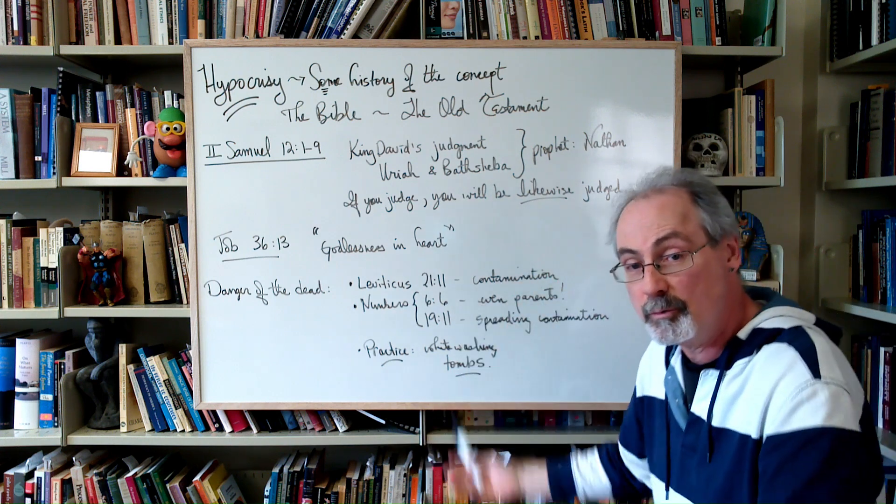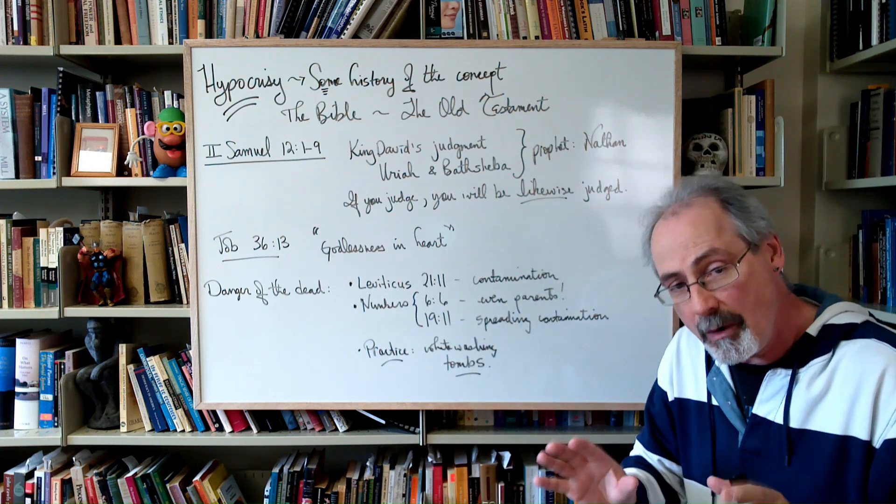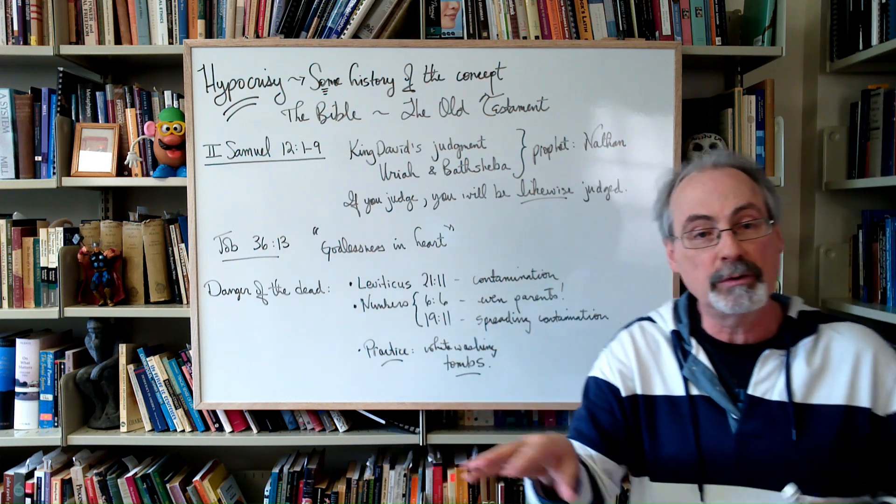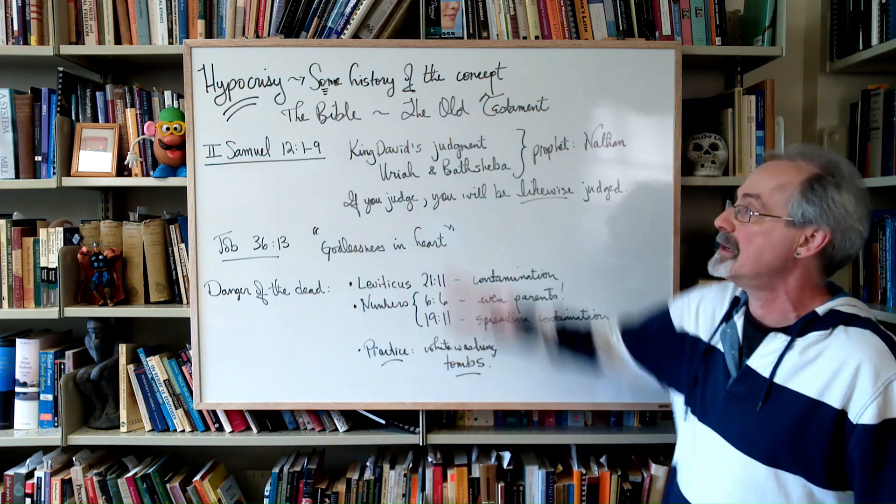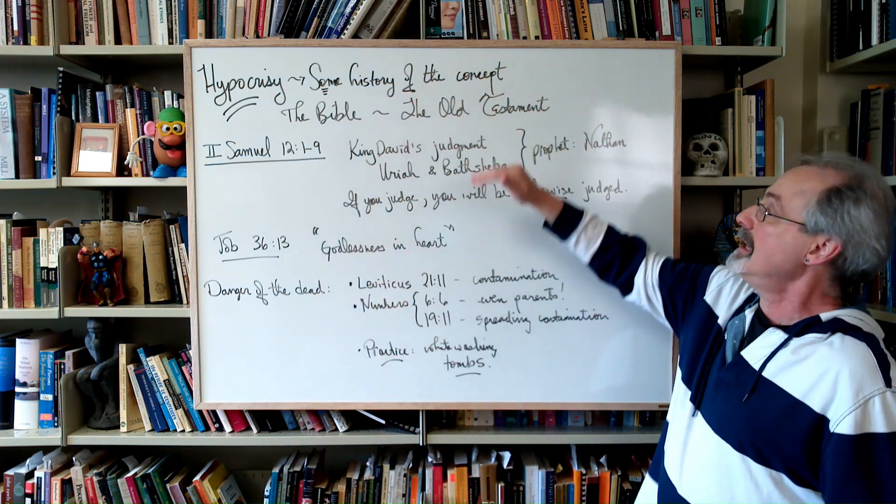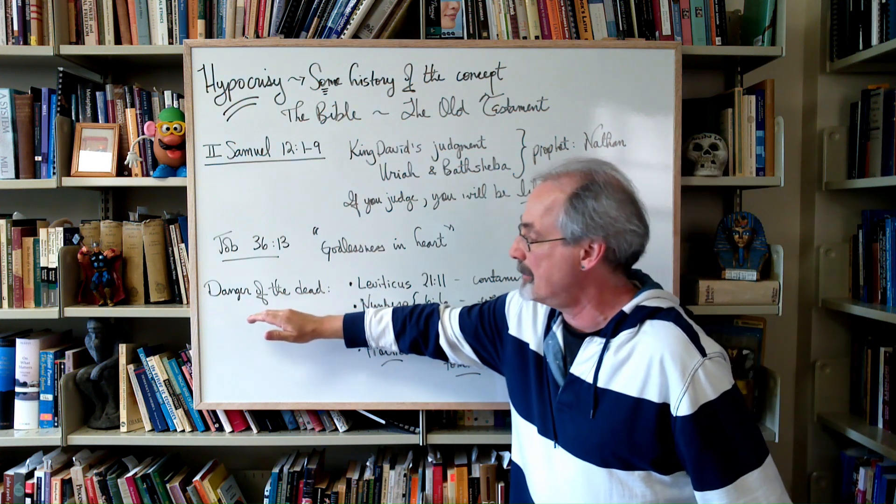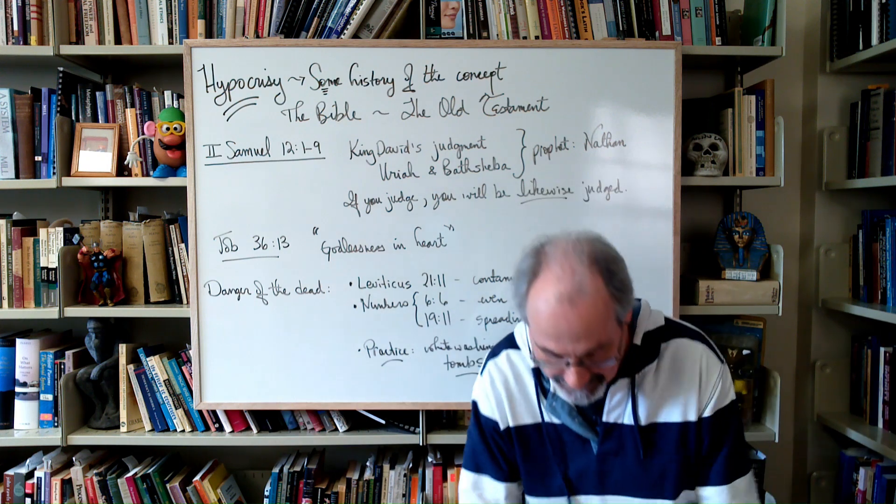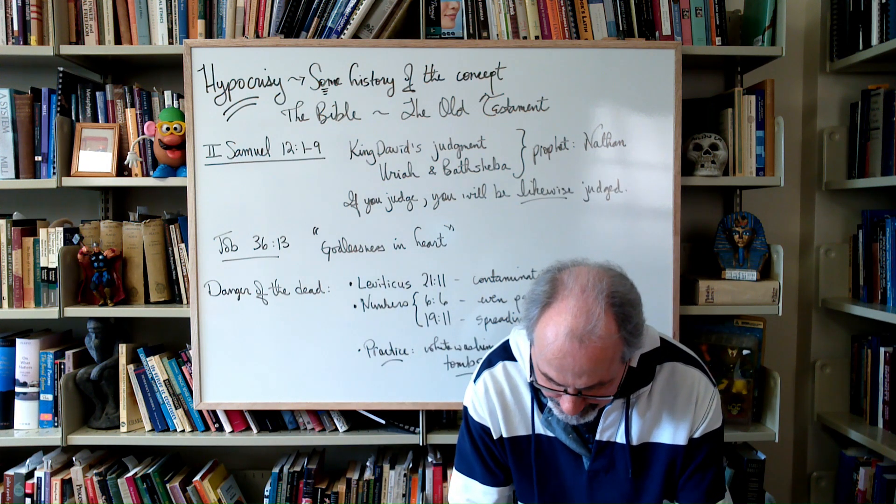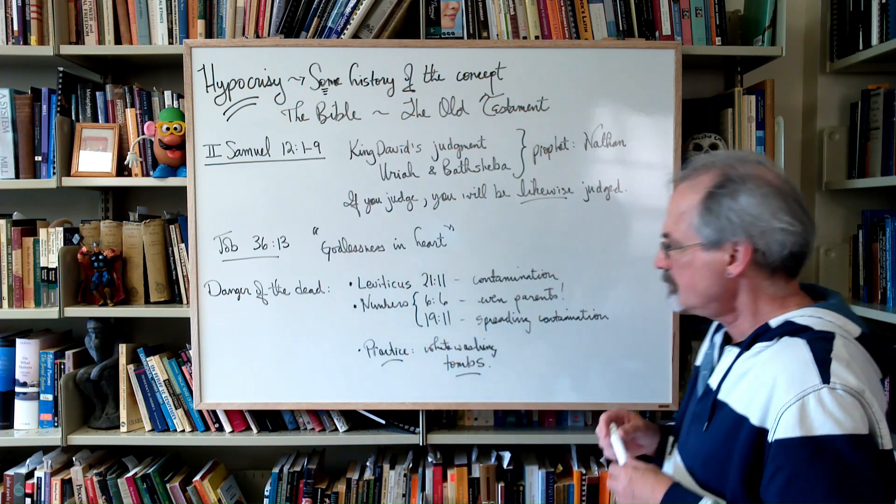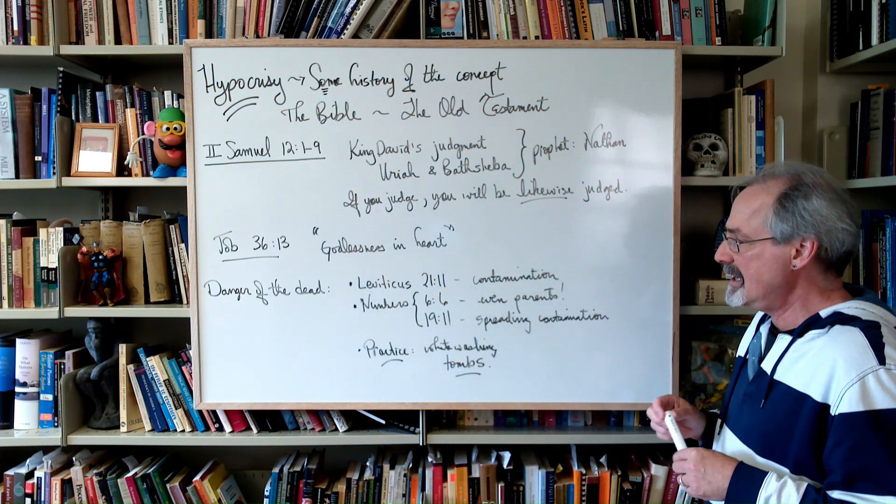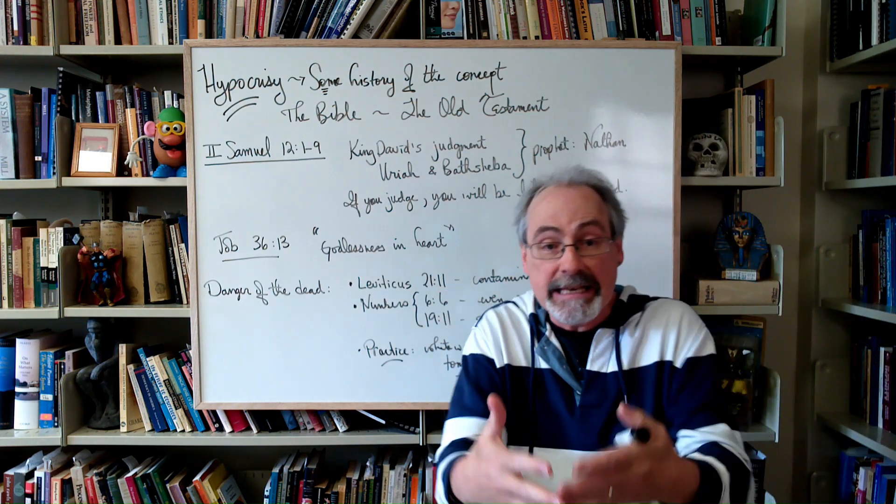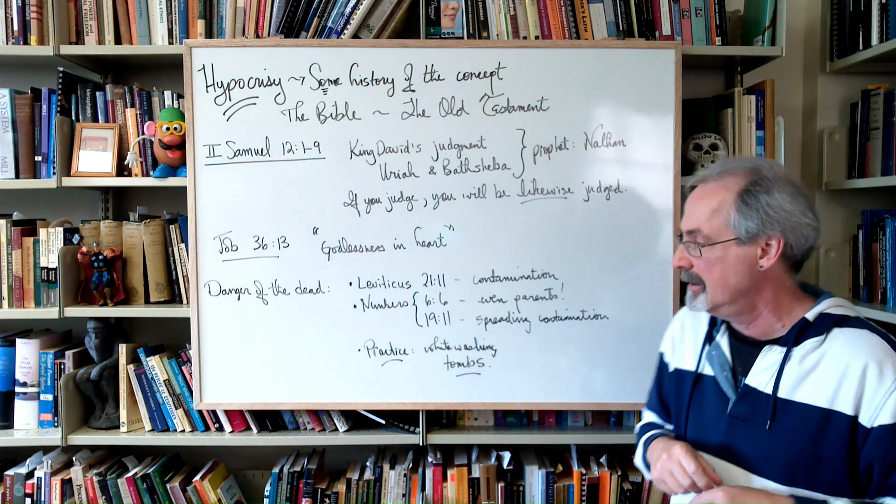And again, these ideas will come back in the New Testament. I want to just finish this video with a little other piece that's relevant to our story of the development of the concept of hypocrisy, especially in the Bible. In the Old Testament, there is a big fear. This is common in the ancient world and in Greece. The danger of the dead. And what is that? Well, in Leviticus, Leviticus 21, you've got to be careful about getting near a dead body, a dead human body.